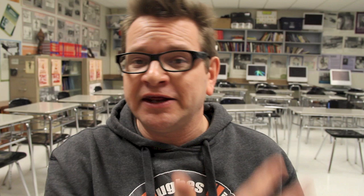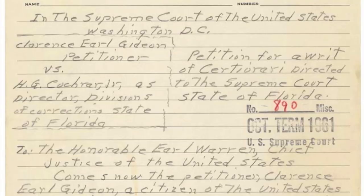So Clarence Gideon defends himself and does a horrible job — he's not a lawyer. He gets convicted and does a cinco: five years in the can. While in the Florida penitentiary system, he takes advantage of the law library.